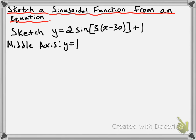That's one thing we're going to want to show on our graph. Next, we're going to talk about the amplitude. You can get the amplitude from the a value — it's the absolute value of our a value. Our a value is 2 here, so our amplitude is just 2.